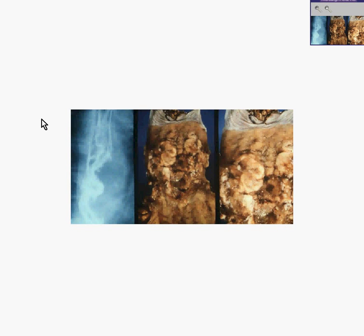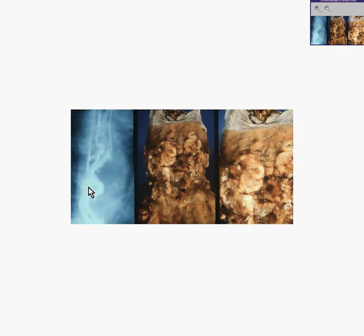Here is another GI organ — in this case, it happens to be the esophagus. Here is what they call a barium swallow, in which the patient swallows barium, which is radio-dense. Although you can see normal streaking along the mucosa in the upper portion of the esophagus, you can see an area in which you have bulging and retention of the barium.